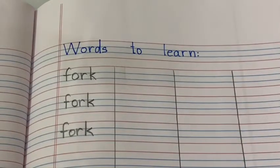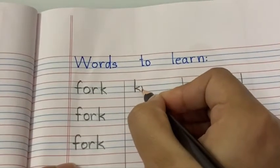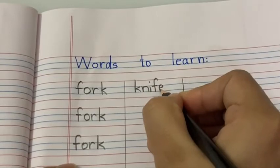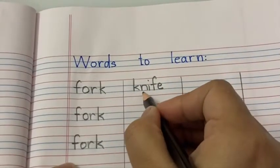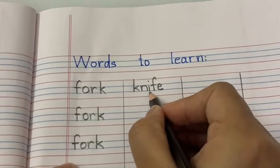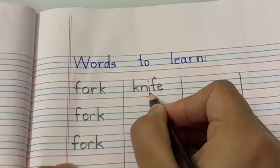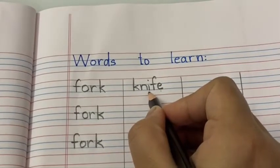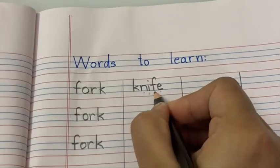Next word is knife, children. K-N-I-F-E. Knife. Okay, K is silent here. N says N, I, N-E. Right children. So this is long sound of I, so we will read as I. N-I-F, knife.